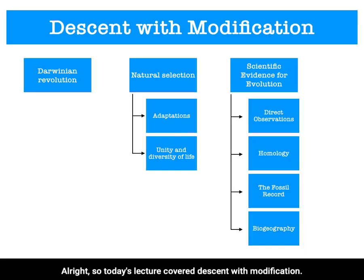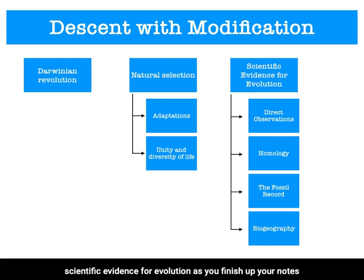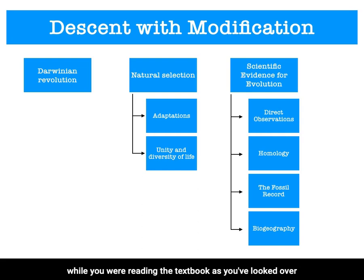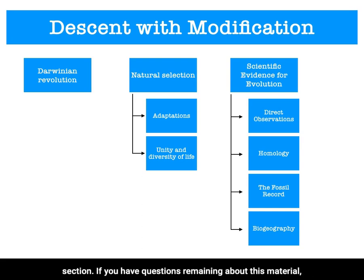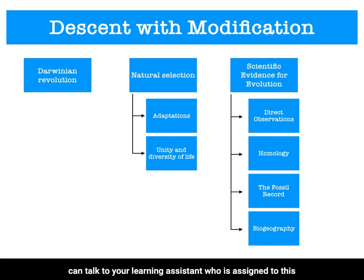Today's lecture covered descent with modification. We looked at the Darwinian revolution, natural selection, and scientific evidence for evolution. As you finish up your notes from this lecture, combine them with the notes you took while reading the textbook. You can prepare for the quiz and for the test on this material by using the assisted reading questions, the questions at the end of the chapter, and the questions at the end of each chapter section. If you have questions remaining about this material, please reach out to your professor through email or office hours, or bring your questions to class. Additionally, you can talk to your learning assistant who is assigned to this course.